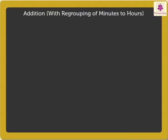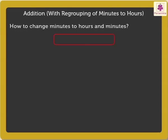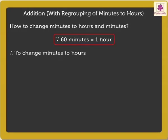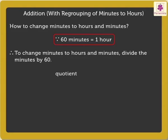To be able to regroup minutes to hours, we need to first learn how to change minutes to hours and minutes. We know 60 minutes is equal to 1 hour. Hence, to change minutes to hours and minutes, we divide the minutes by 60. The quotient gives us the hours and the remainder gives us the minutes.